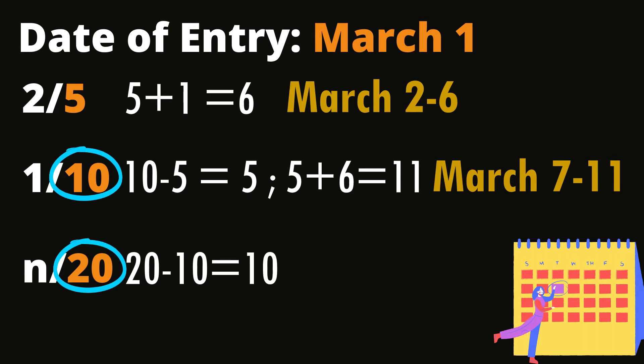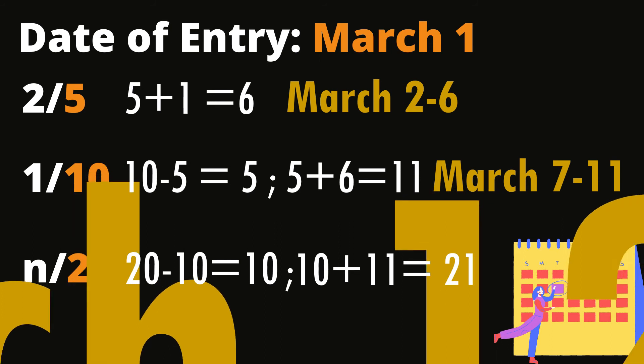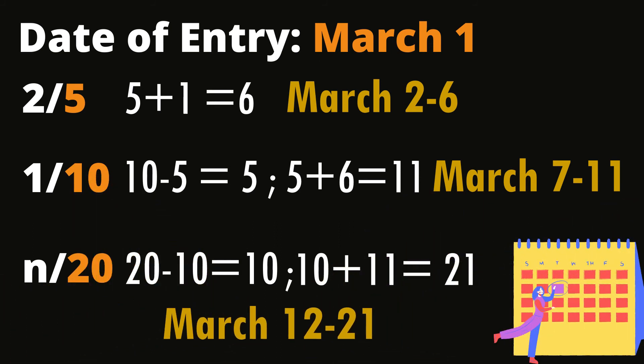There are 10 remaining days to complete the transaction. Therefore 10 plus 11 equals 21. The discount period for the last credit term would be from March 12 to March 21. Thank you for tuning in to today's video.